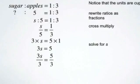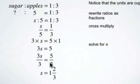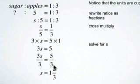We get three S is equal to five. Solving for S by dividing both sides by three, we get S is equal to five over three. Five over three is an improper fraction, so we convert it to a mixed fraction.